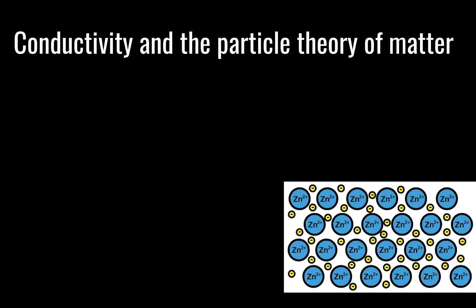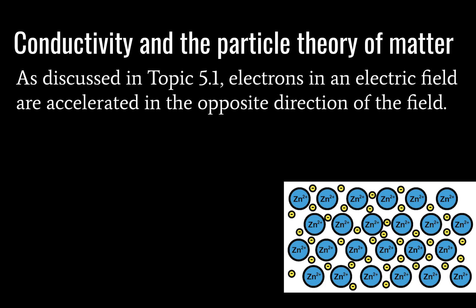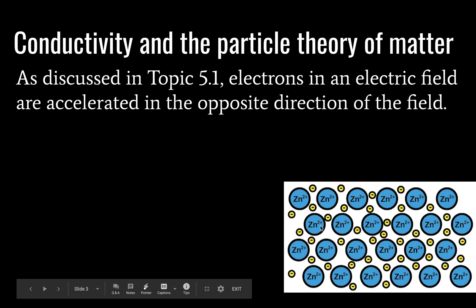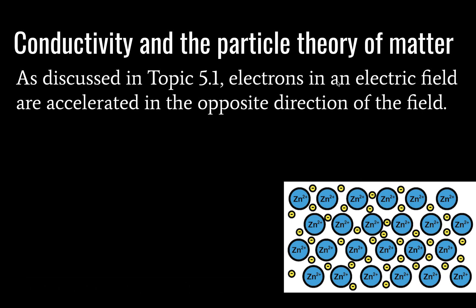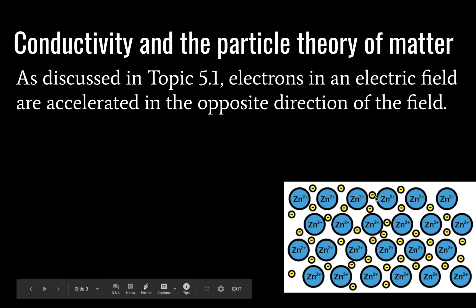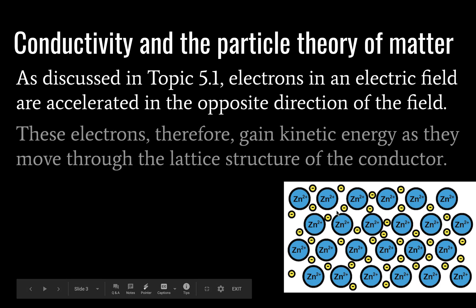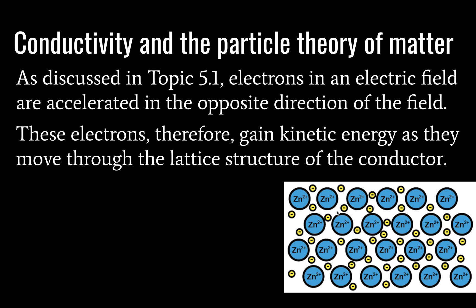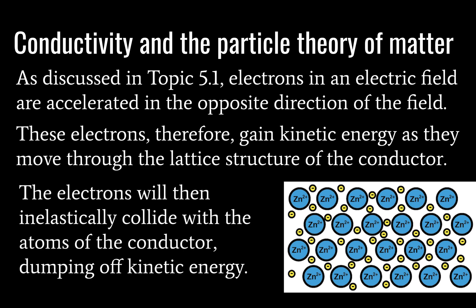First, we need to talk about conductivity and the particle theory of matter. In the lower right-hand corner you can see the zinc ions, and as we discussed in topic 5, electrons in an electric field are accelerated in the opposite direction of the field. So if we apply an electric field through this conductor, the electrons will move the other way. These electrons, being accelerated, will obviously gain kinetic energy — they have mass, they have velocity, they have kinetic energy. The electrons are then going to bump into the zinc ions.